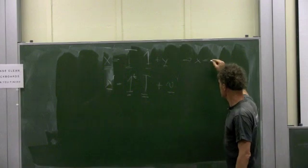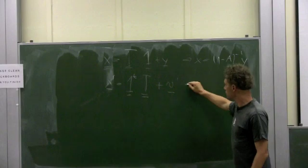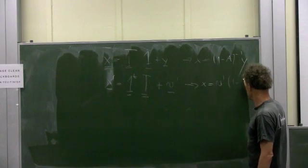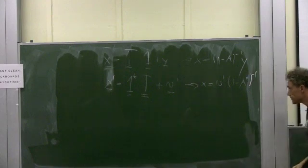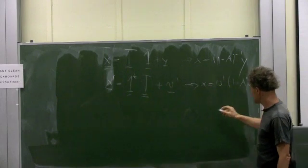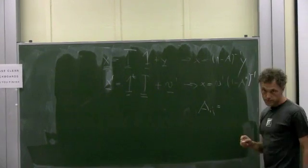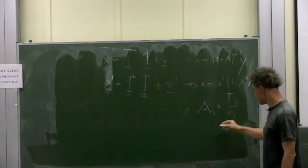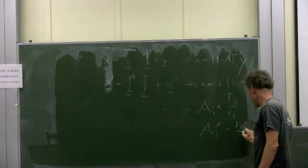This goes to x equals 1 minus a inverse y. And this one goes to x equals v transposed 1 minus a star inverse. Right? And the difference here is Aij is the coefficient, the Leontief coefficients matrix, that is tij divided by xj. But a star, aij star, equals tij divided by xi.